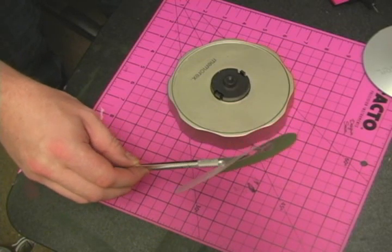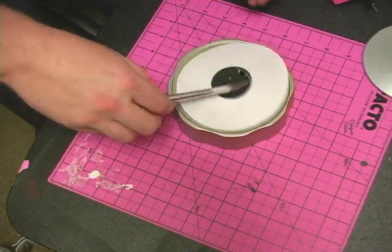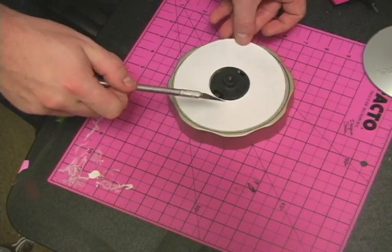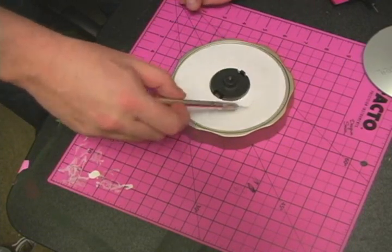Now what I do is I take the Exacto knife and put it on here just like that. Line it up as you would one that came with the kit.